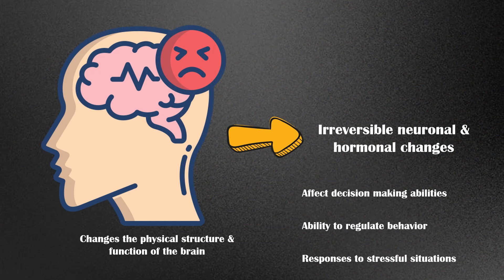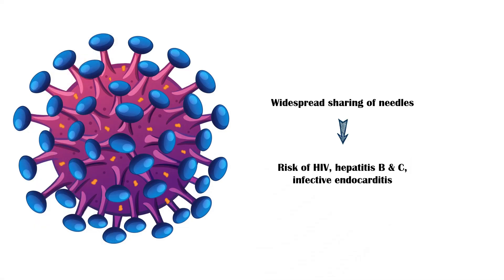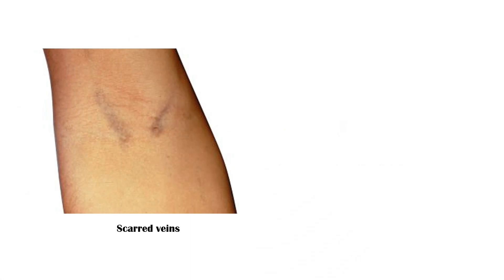Frequent injection of heroin coupled with widespread sharing of syringes increases the risk of contracting HIV, hepatitis B and C, and other blood-borne infectious diseases, such as infective endocarditis. Long-term use of heroin also causes severe medical consequences, such as scarred veins, bacterial infection of blood vessels, liver and kidney disease, and lung complications.